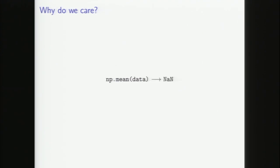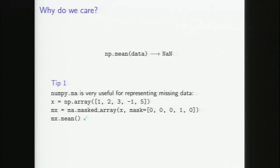Why do we care? The big problem is that most algorithms are either not defined to work for missing values or simply not implemented to work for them. If you have an array called data and you say np.mean, you're going to get a bunch of NaNs if there are missing values. There's the numpy.ma library which lets you do a simple masking out of missing values — that's a nice little trick. But what if you wanted to use someone else's library and when you chuck in a dataset with missing values, your computer crashes?